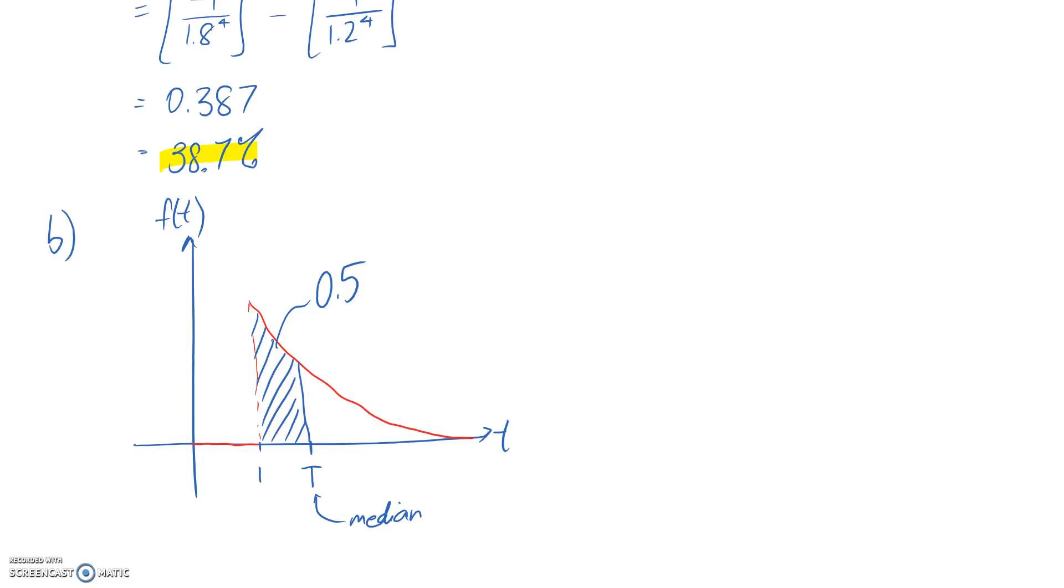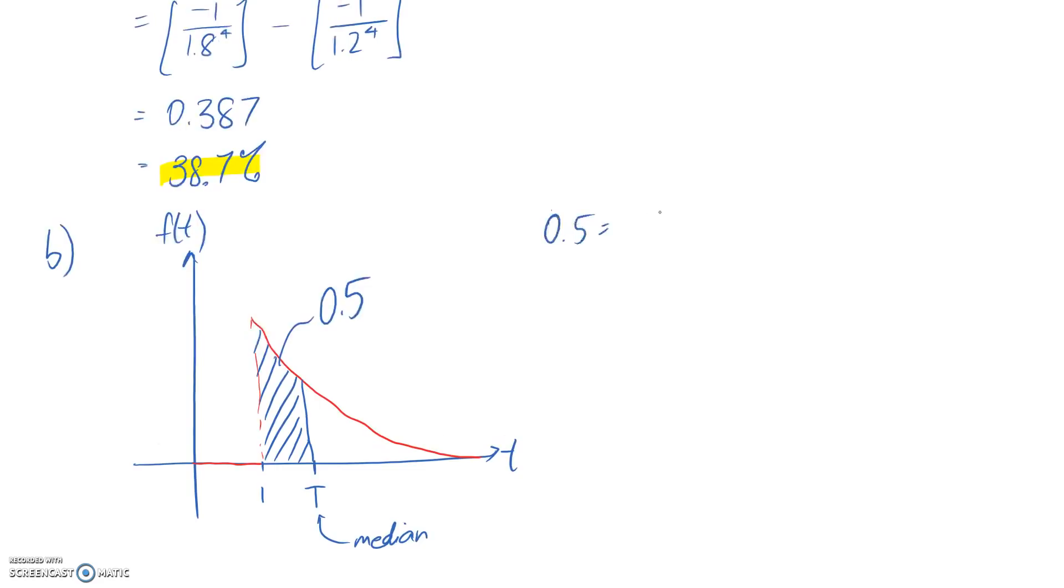What I can say is that 0.5 is going to be equal to the integral or the area under the curve between 1 and this t value that I'm trying to find, and this curve was defined by the equation 4 over t to the 5, and we're integrating with respect to the time variable. Now, equally, I could have set this up as being equal to the integral from t all the way up until t is equal to infinity, and that should also be equal to 0.5, but I'm going to go with this one.